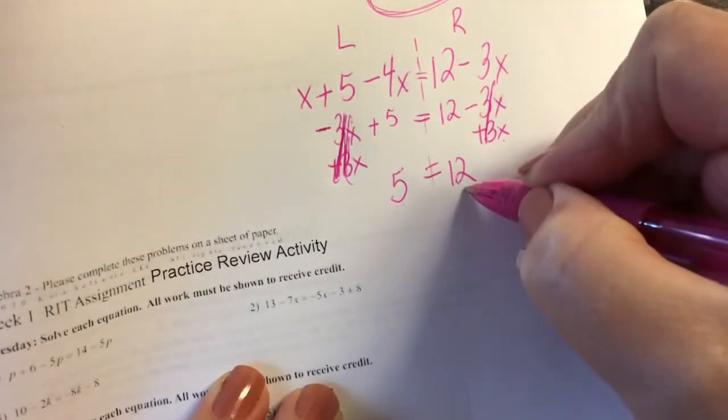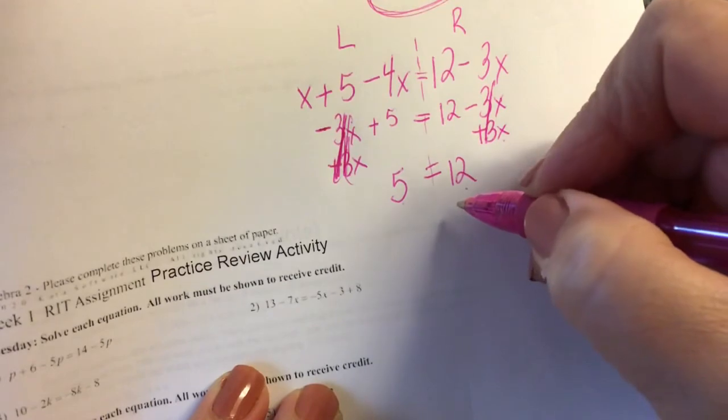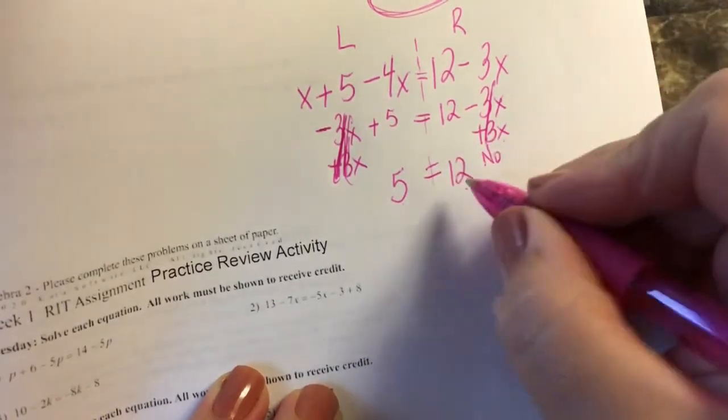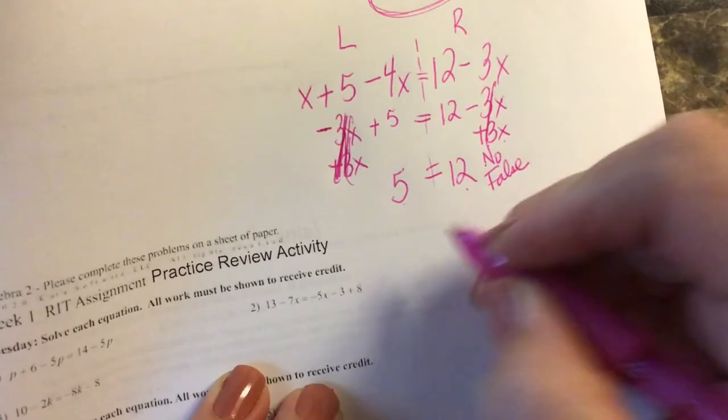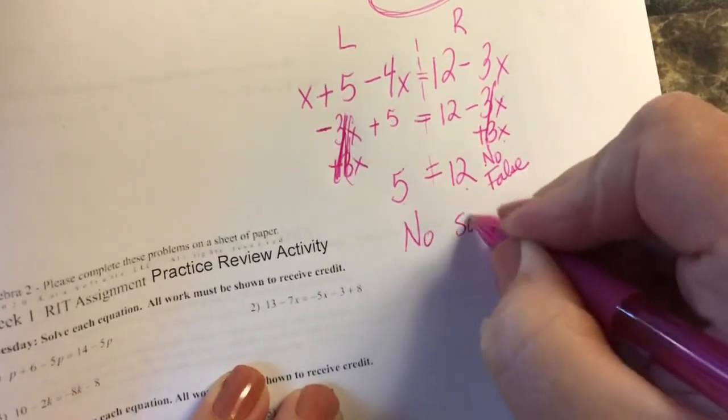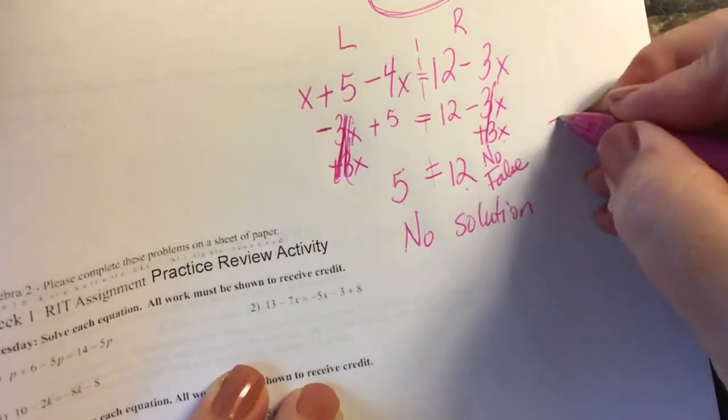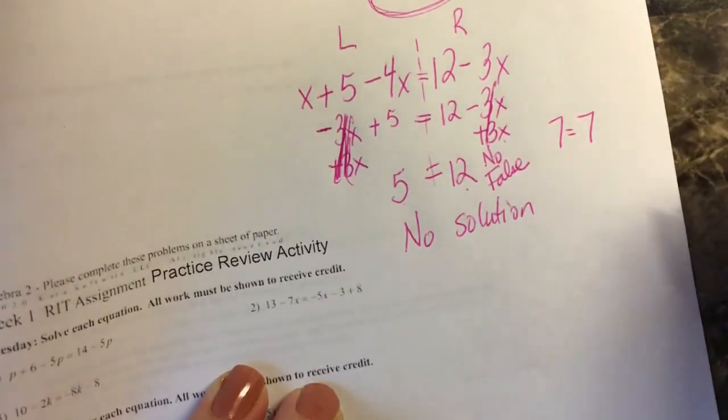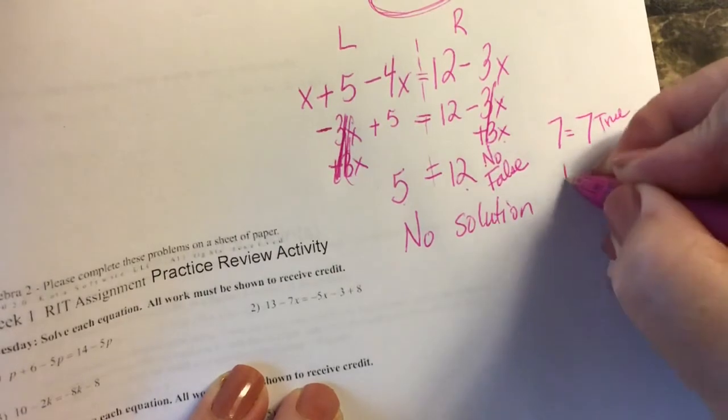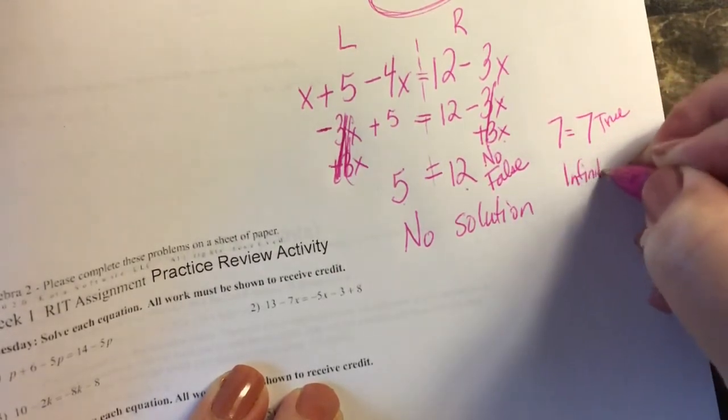Does 5 equal 12? Hopefully you know the answer to that is no. So when you make a false statement then the answer is no solution. Now had we made a true statement, if that had ended up with 7 equals 7, then that is true and this would be infinitely many solutions.